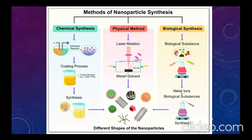The most common physical method for synthesizing nanoparticles is laser ablation. In laser ablation, a high-power laser is used to vaporize a target material, which then condenses to form nanoparticles. This technique allows precise control over particle size and composition, as the metal reacts with the solvent leading to different shapes and sizes. Other physical methods include physical vapor deposition, sputtering, magnetron sputtering, vapor condensation, chemical vapor condensation, flame synthesis, spark discharge, and electron beam evaporation.